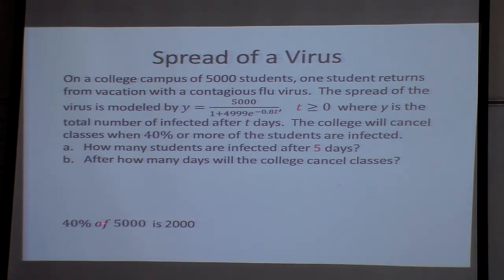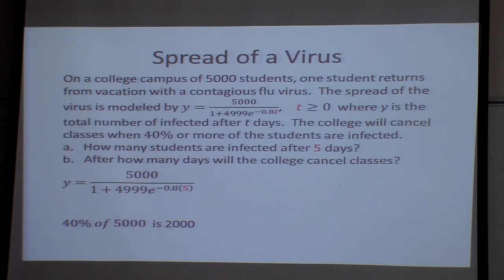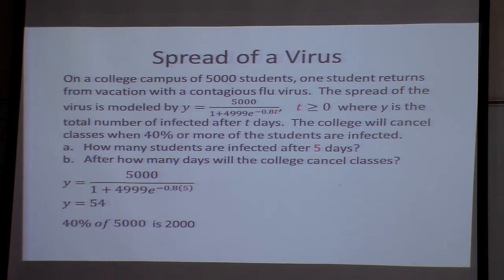So 40% of 5,000 is 2,000. First off, how many students are affected after 5 days? Well, plug 5 into T, put it in your calculator, and you get 54. That's the answer to part A. That's all you've got to do on some of these — find the value, plug it in.